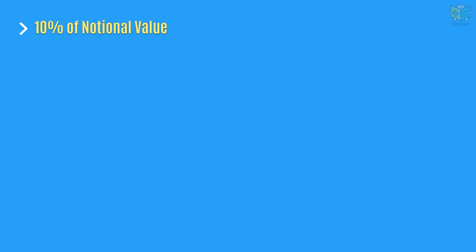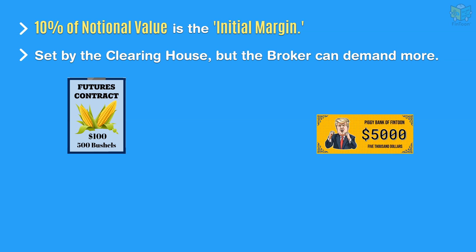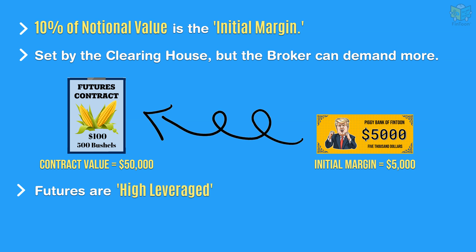This 10% margin is known as the initial margin. The clearing house sets the initial margin requirement, but the broker can collect additional funds. By depositing only a small percentage of value, i.e., $5,000, the traders are able to get an exposure on the entire contract worth $50,000. Thus, futures are highly leveraged instruments and are risky.